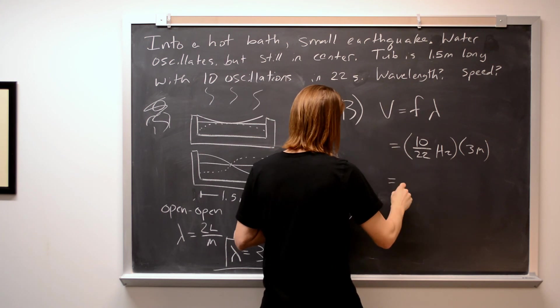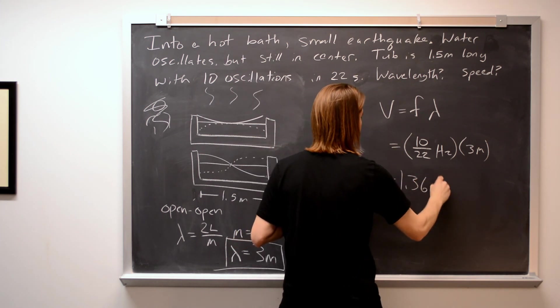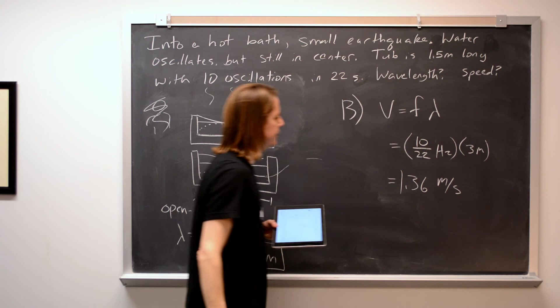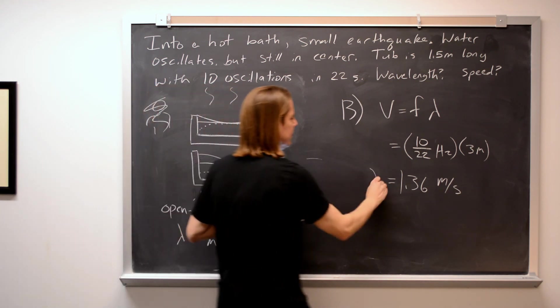With a wavelength of 3 meters and a frequency of 10/22 hertz, you get a wave speed of 1.36 meters per second. That is the speed.